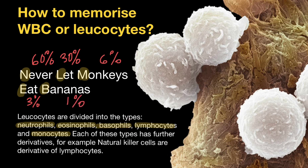As you see, the abundance is given in descending order. Here's the pattern: 60%, then 30% which is half of 60, then 6% which is one-tenth of 60, then 3% which is one-tenth of 30. That accounts for 99%, so basophils have only 1% left. This is a very easy pattern to memorize. All you have to do is memorize this sentence, and the rest you will recall automatically.